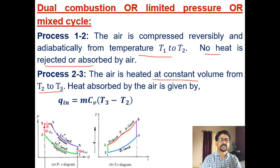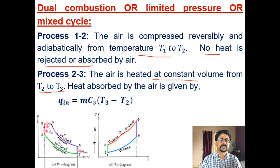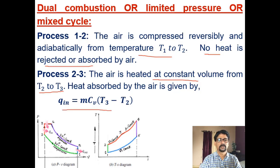Temperature increases from T1 to T2, volume decreases from V1 to V2, and pressure also increases. No heat is rejected or absorbed during this process. Process 2 to 3 is a constant volume heat addition process: temperature increases from T2 to T3, pressure increases from P2 to P3, but volume remains the same. Heat addition for this constant volume process is Q_in = m·Cv·(T3 − T2).